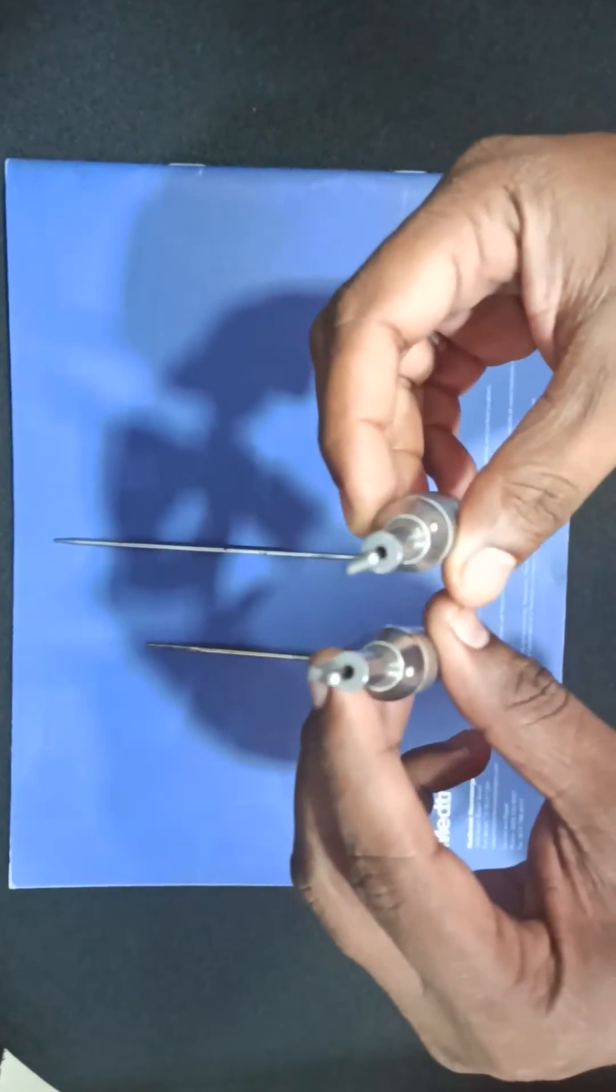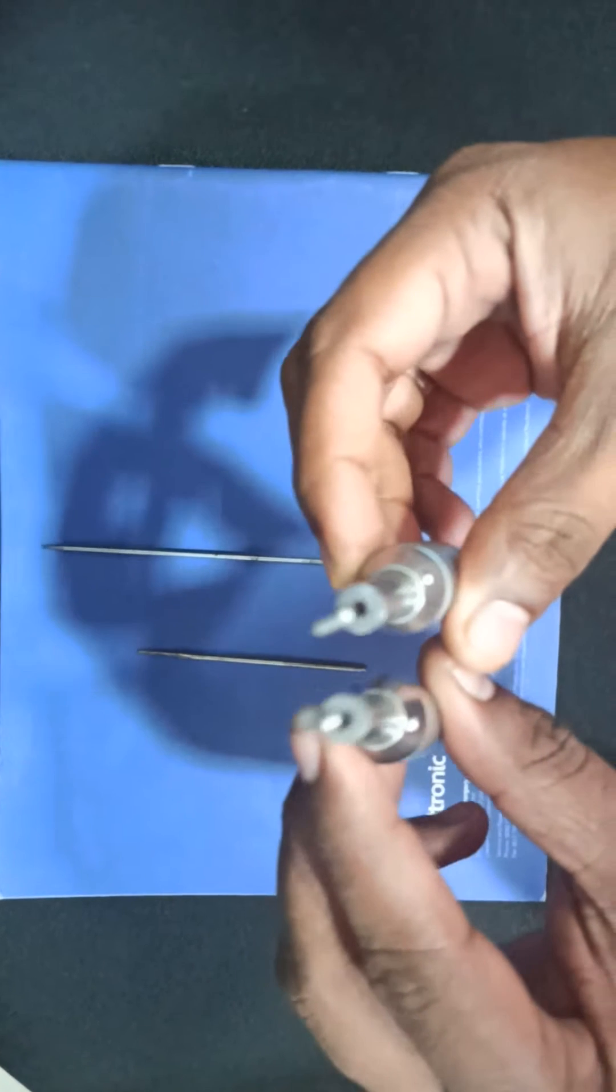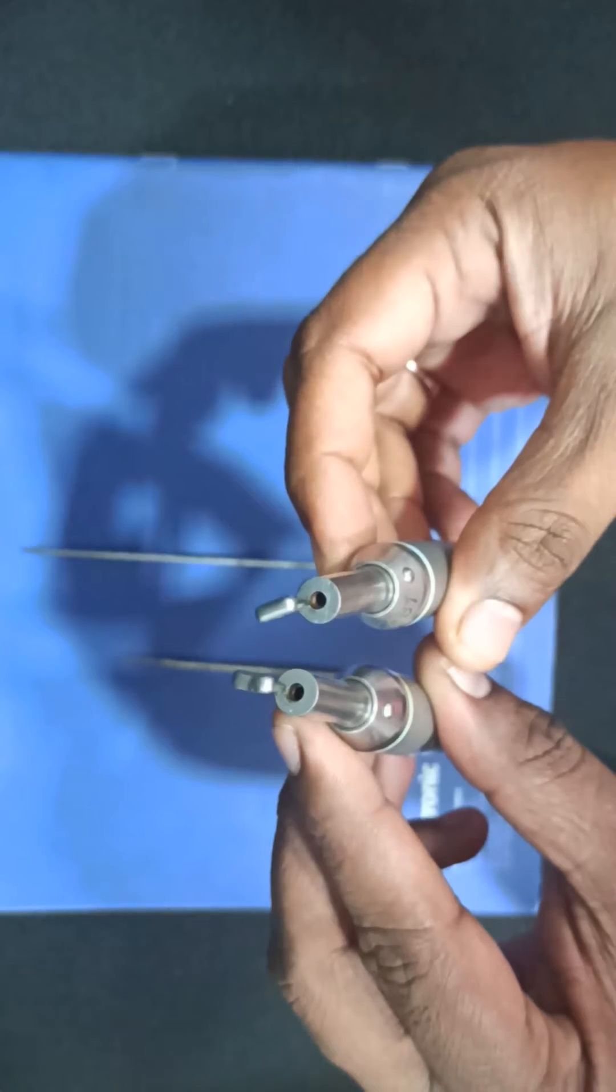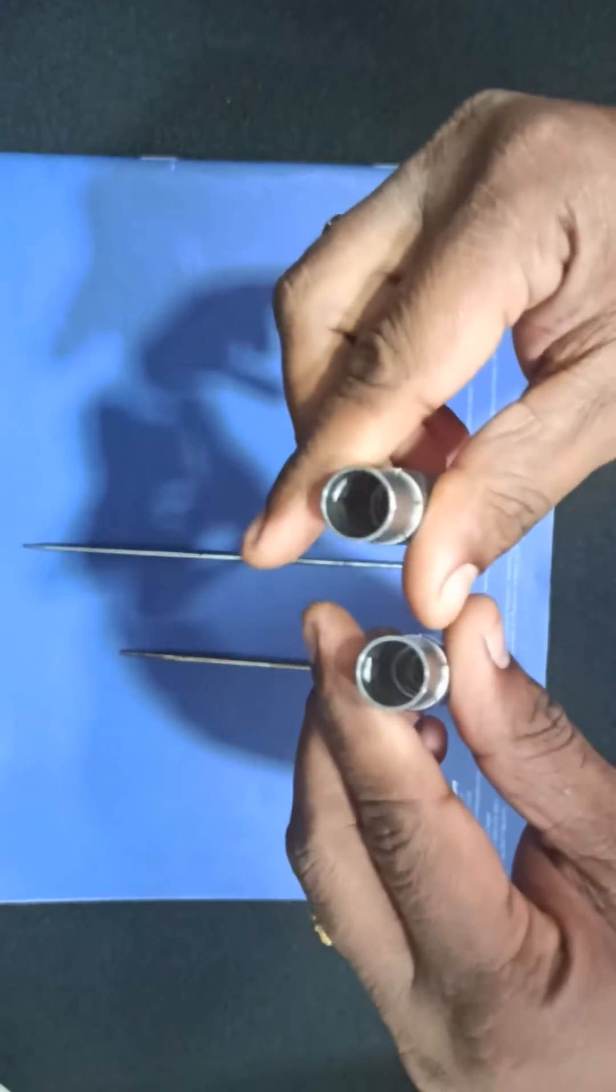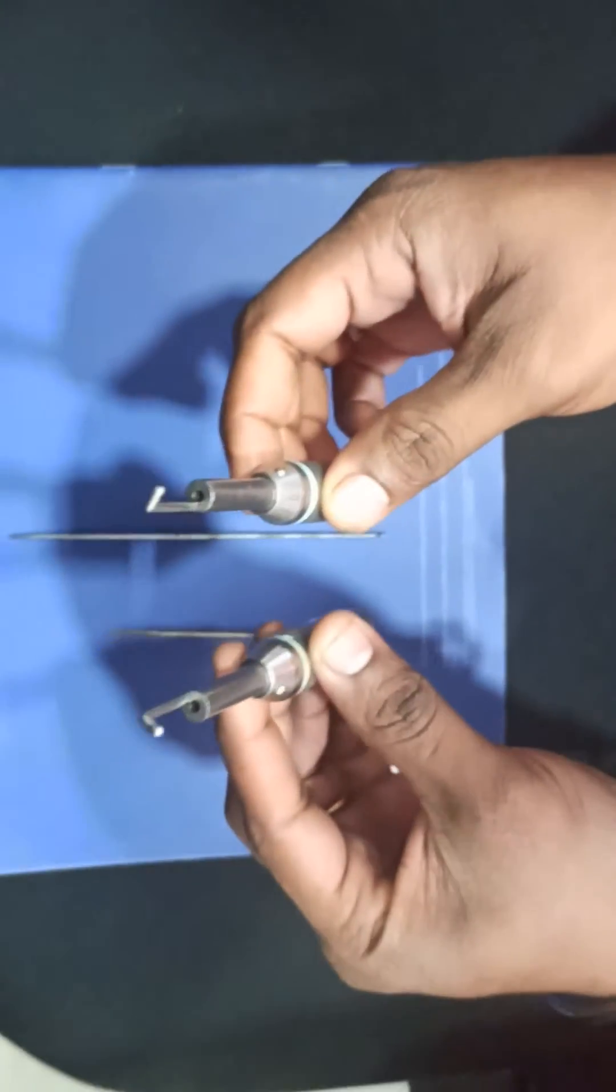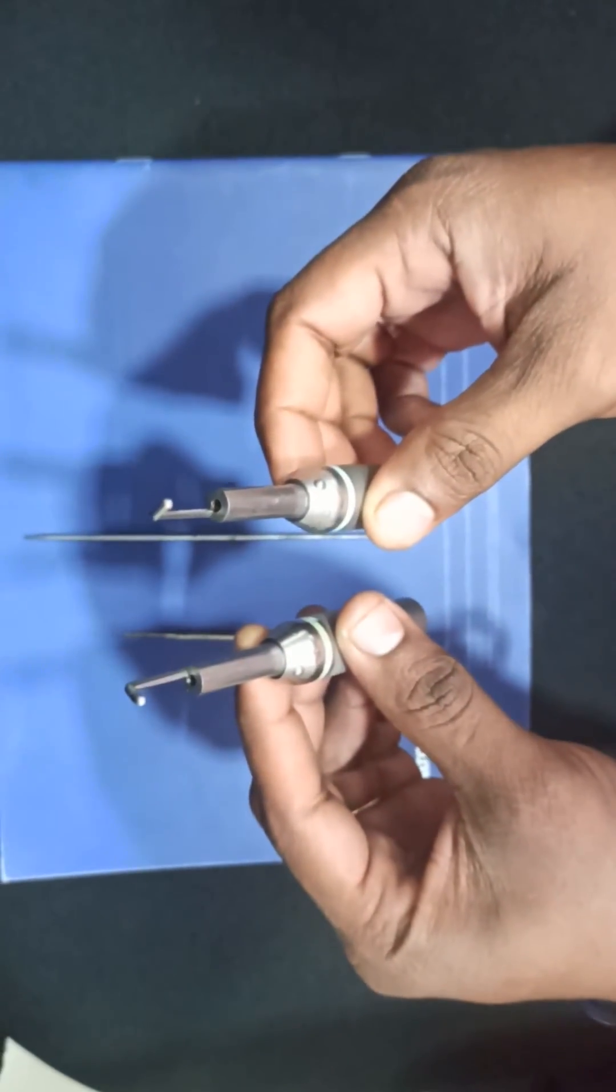When you see both attachments, you can see both holes are the same and clear. There is no damage in the bearings and everything looks clear. But how do you find which one is defective and which one is good?